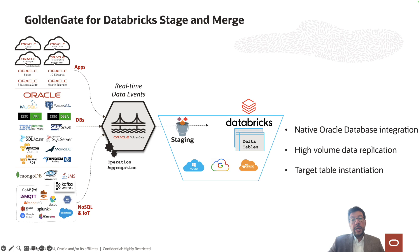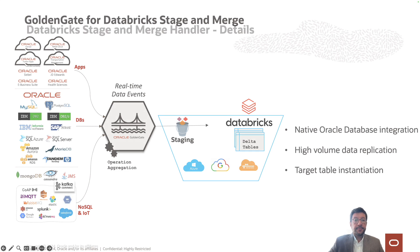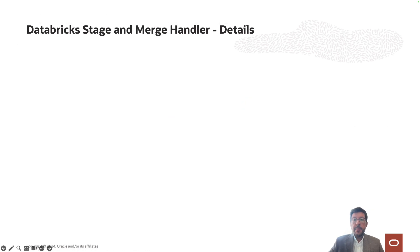GoldenGate also provides high throughput for Databricks replication with its stage and merge design. Using the GoldenGate Databricks handler, you can also run your initial loads into delta lakes and sync them with CDC replication.